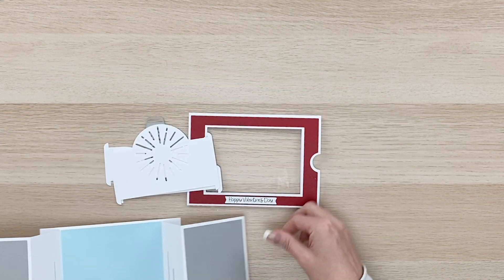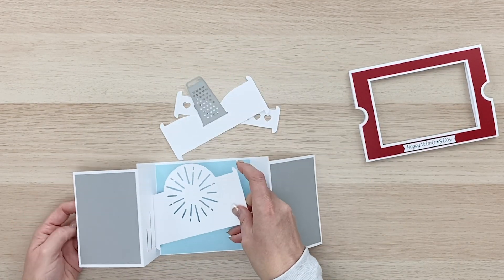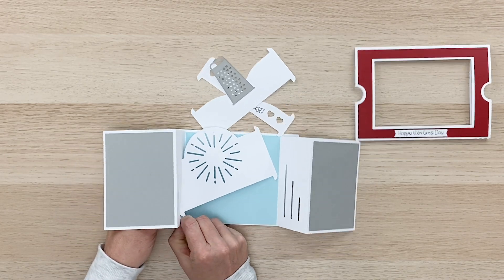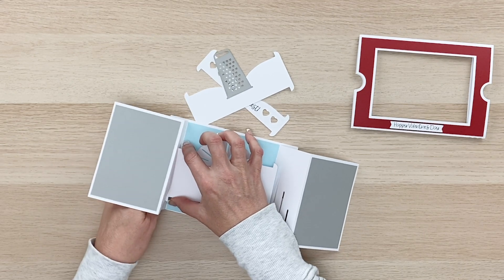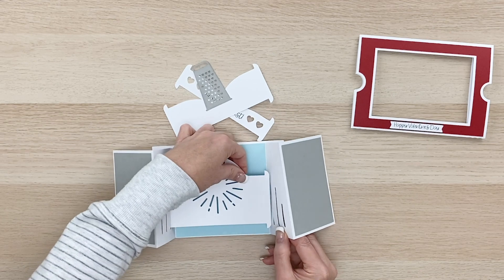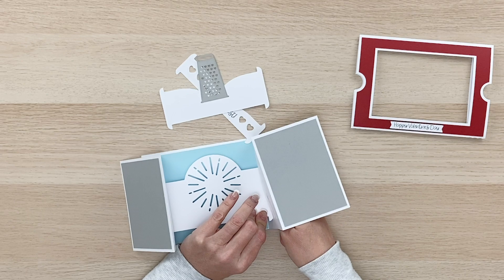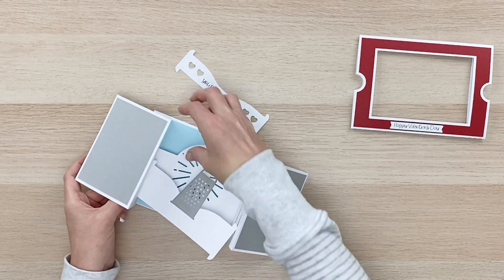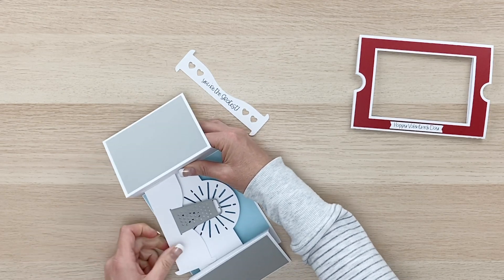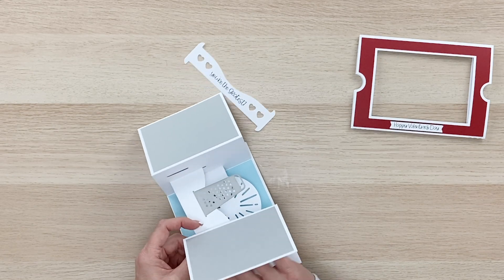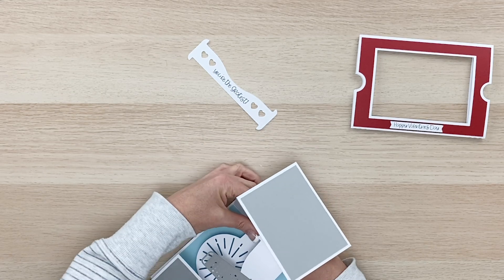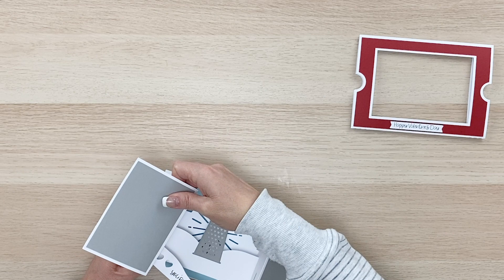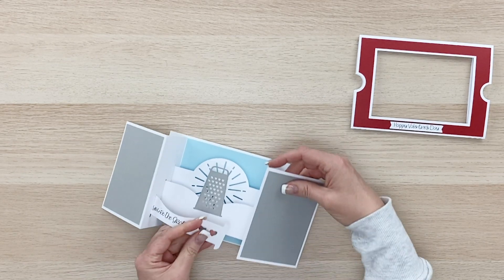So all we need to do at this point is just feed our three little inserts in. So we're going to start with our largest one and put it in the back. And then we're going to put our little grater here in the middle. The one thing I do recommend is using a nice sturdy cardstock 80 pound or so for these inserts and just so it's a nice sturdy project.